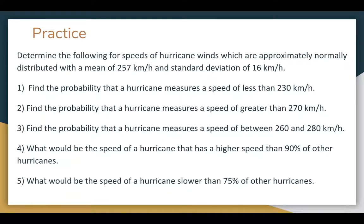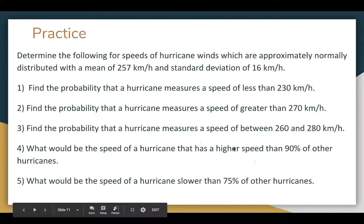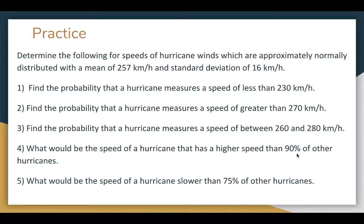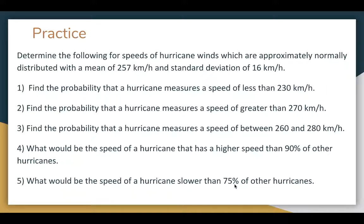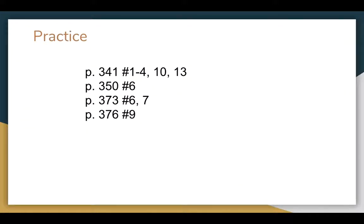And so here's some practice that you can do using the chart. And so I'll leave that to you to try to find things. If you had a question that hurricane is higher than 90%, that's the 90th percentile. A hurricane that's slower than 75%, that's the 25th percentile. And there's some more practice.